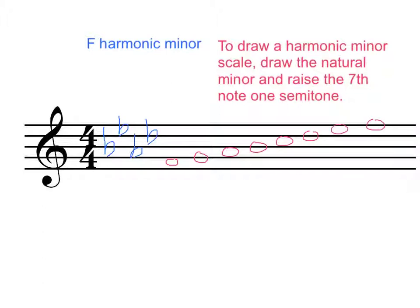Now we need to find the seventh note. 1, 2, 3, 4, 5, 6, 7. There it is right there. And that is an E. If you look over here in the key signature, you will notice that that is actually E flat. So in order to raise that, we need to make it natural and cancel that flat sign. So we have to put a natural sign right in here beside the E. Now we have a harmonic minor scale that's built on F. So it's F harmonic minor.